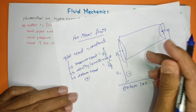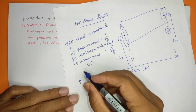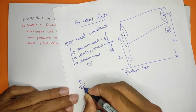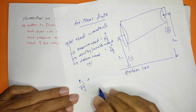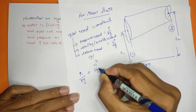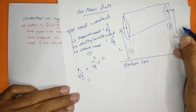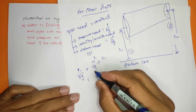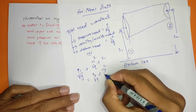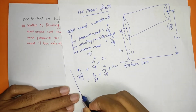Applying Bernoulli's equation: P1 by ρg plus V1² by 2g plus Z1 equals P2 by ρg plus V2² by 2g plus Z2. This equation is the same for both sections.